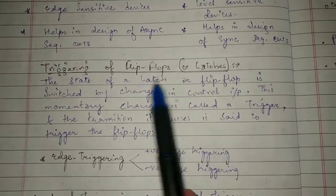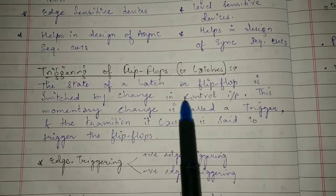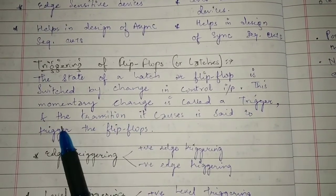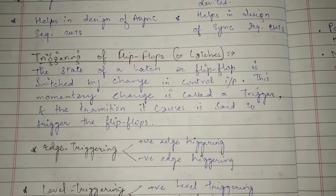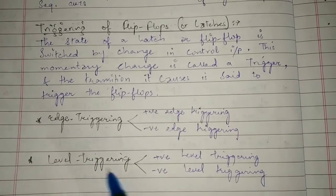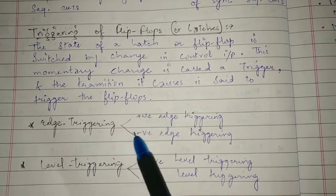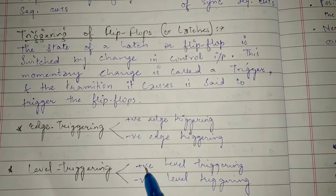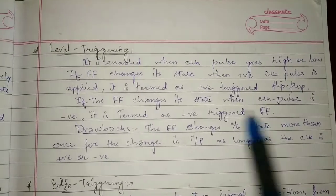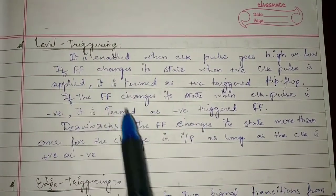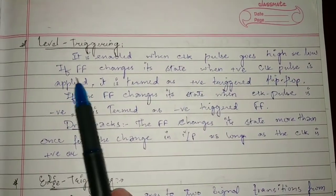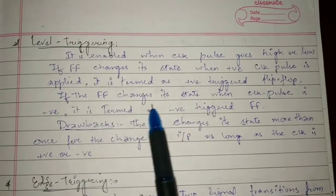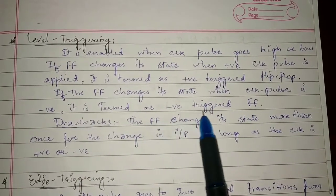Now let's discuss the triggering of flip-flops and latches. The state of a latch or flip-flop is switched by a change in control input. This momentary change is called triggering, and the transition it causes is said to trigger the flip-flop. There are two types of triggering: edge-triggering and level-triggering, each further divided into positive and negative types. Level-triggering is enabled when the clock pulse goes high or low. A positive triggered flip-flop changes state when a positive clock pulse is applied; a negative triggered flip-flop changes state when the clock pulse is negative.